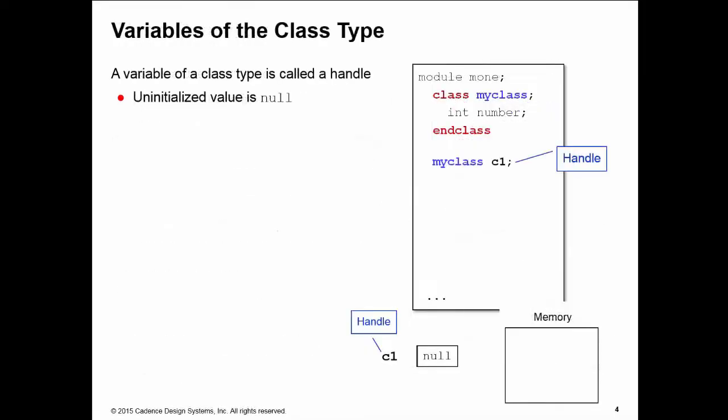Once we have our class declaration we can declare a variable of the class type, and this is called the class handle. The uninitialized value of a class handle is null, and you can test for this with a conditional statement if you want.